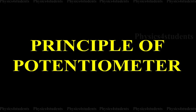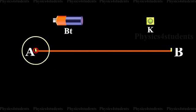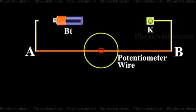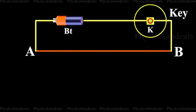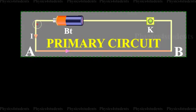Principle of Potentiometer. A battery Bt is connected between the ends A and B of the potentiometer wire through a key K. A steady current I flows through the potentiometer wire. This forms the primary circuit.